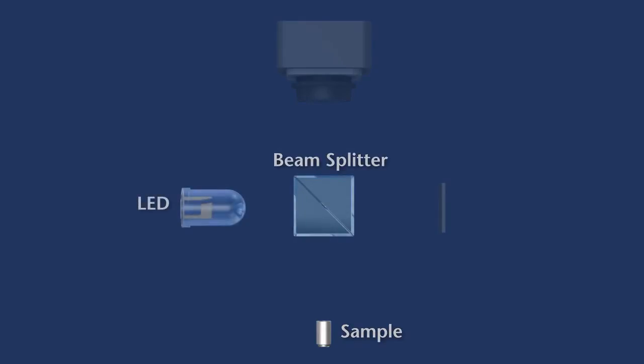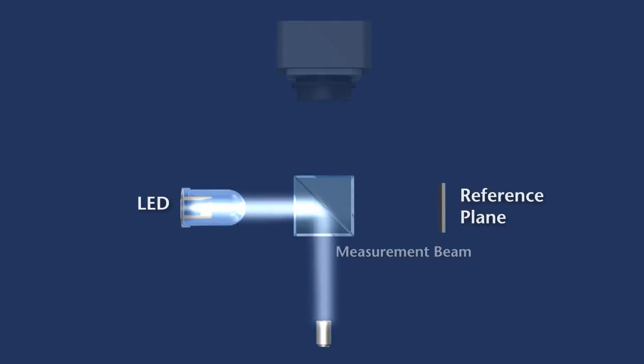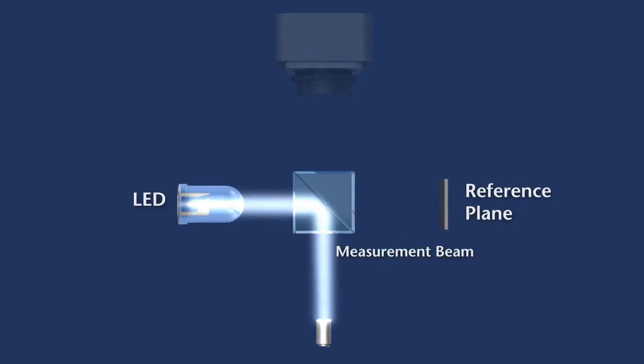To achieve this, a beam splitter divides the beam coming from a white light source into two parts. The reference beam is reflected from a reference plane, while the measurement beam is incident on the test object.